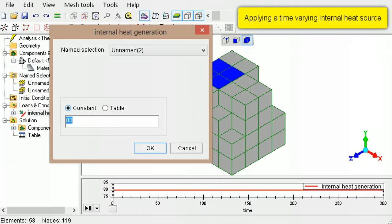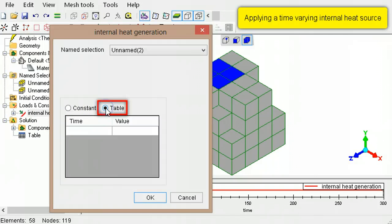If the internal heat generation varies over the duration of a transient thermal analysis, select the table option and follow the same procedure as was described for specifying a time varying heat flow rate.